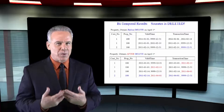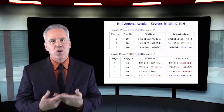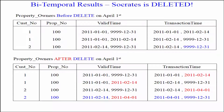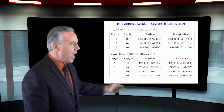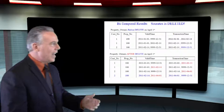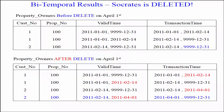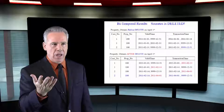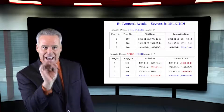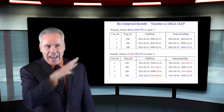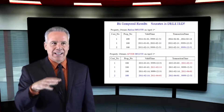What's really surprising here is that there are no open rows. Row one is closed because it has an ending transaction time. Row two is closed because it has a begin valid time and an actual end valid time. Row three is closed because it has an ending transaction time. And row four is closed because it has a beginning and an ending valid time.